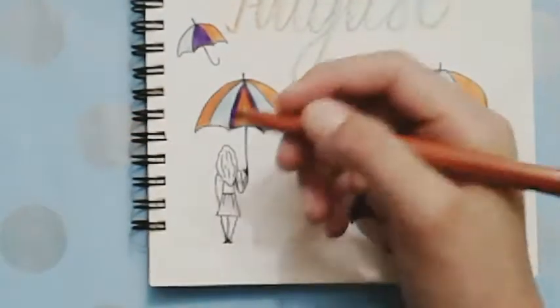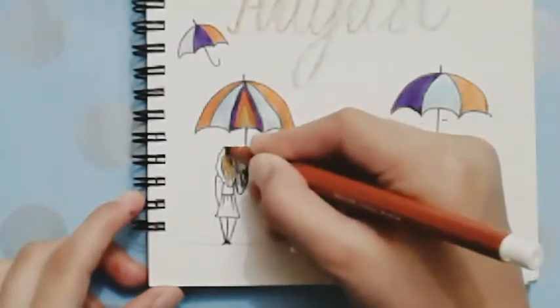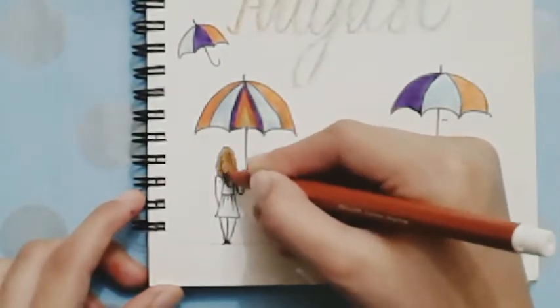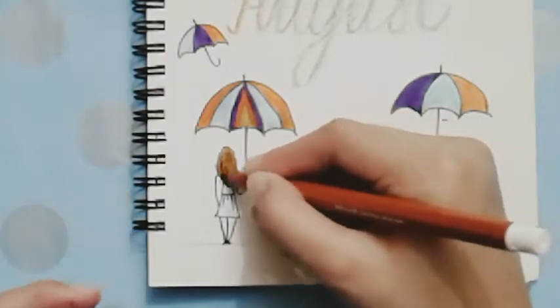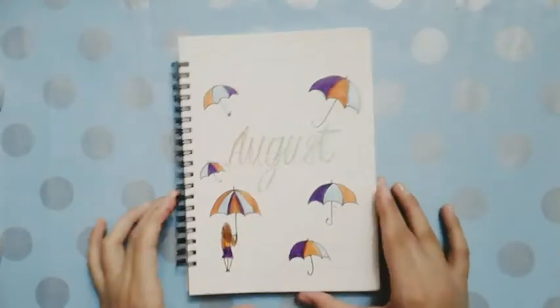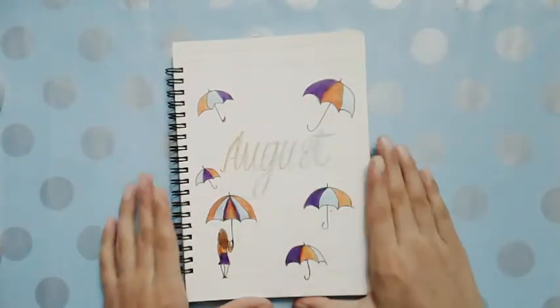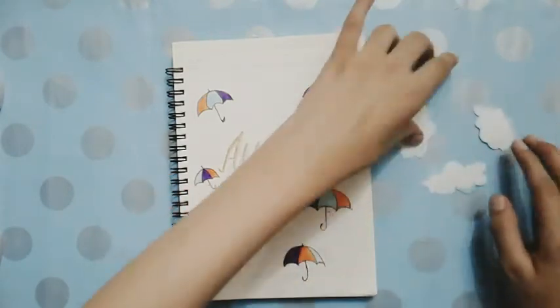I'm going to color the girl's hair brown. Now I'm going to start coloring the dress and it's completed.